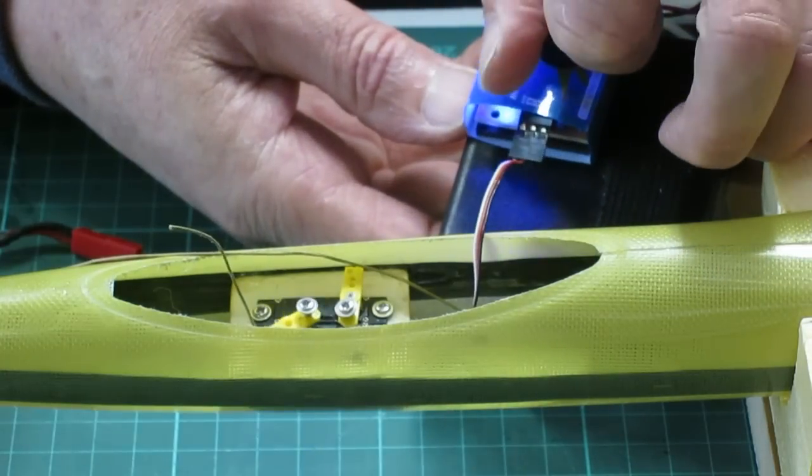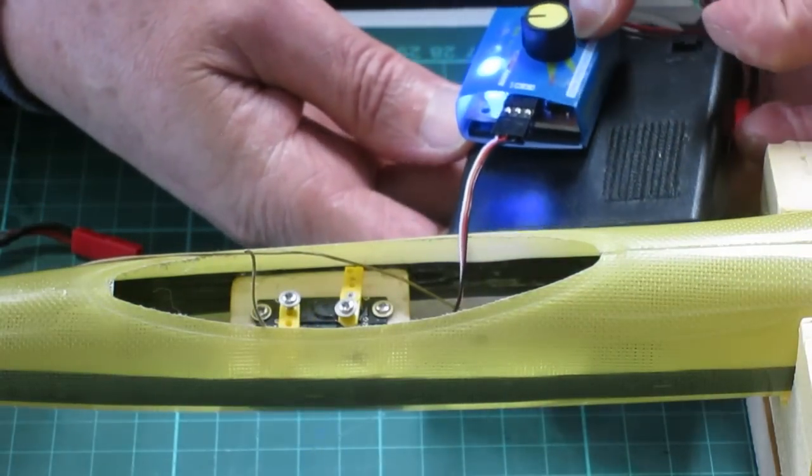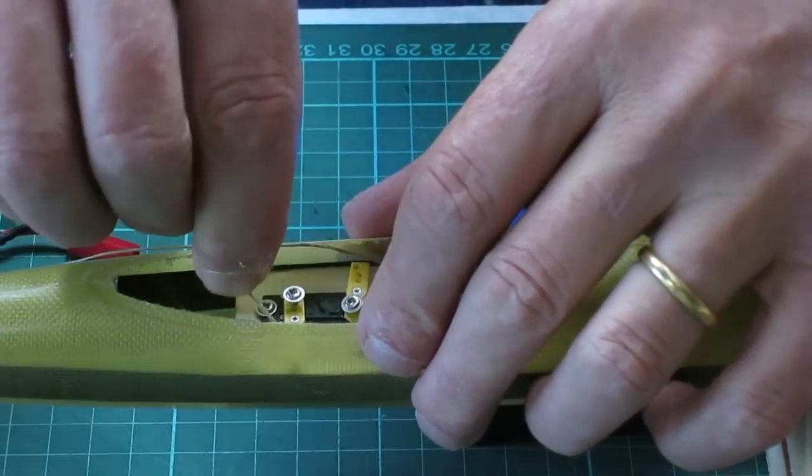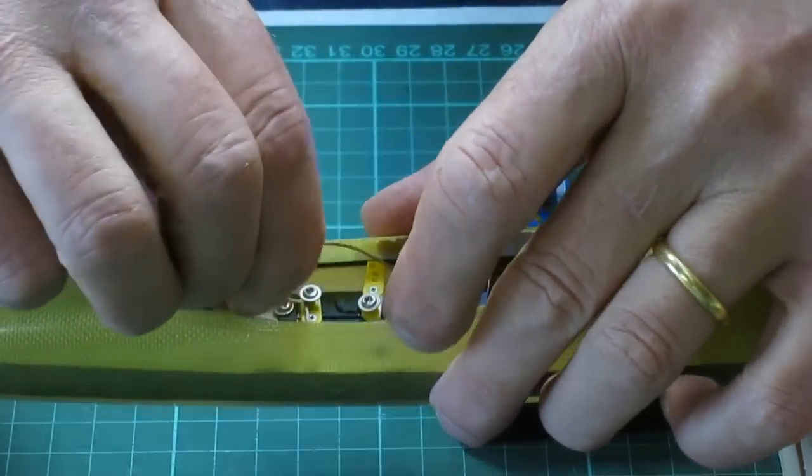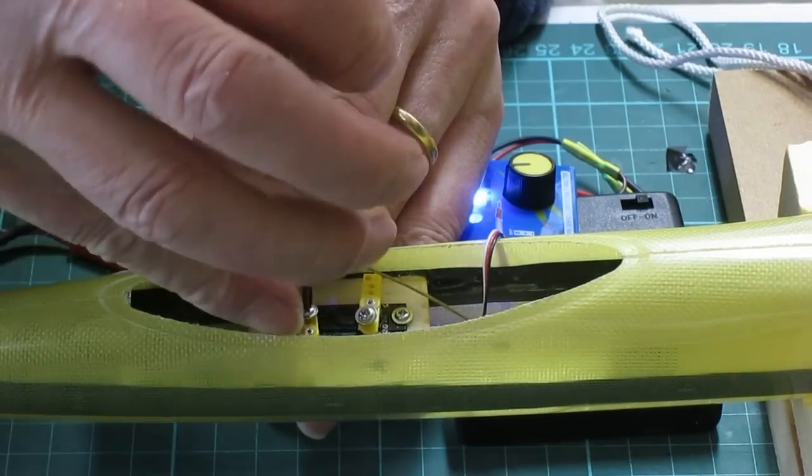Now you need to centre up the servo, and pull up the tension on the line and lock it off around a little screw on the other end of the servo arm.